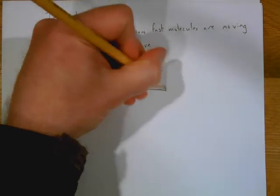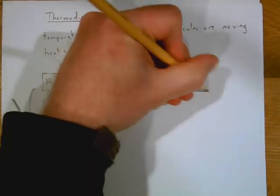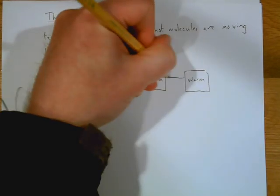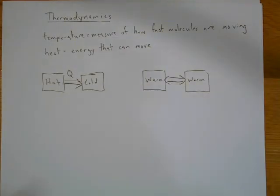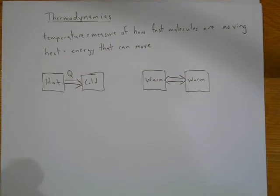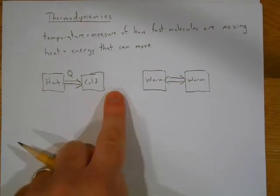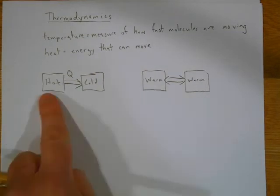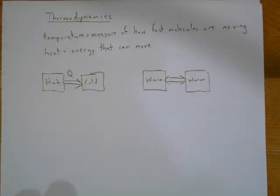Heat keeps moving from hot to cold until the two objects reach the same temperature, at which point heat stops flowing. This is called the Zeroth Law of Thermodynamics — which some amazing physics teachers call the 'duh law' — heat goes from hot to cold until everything is the same temperature.